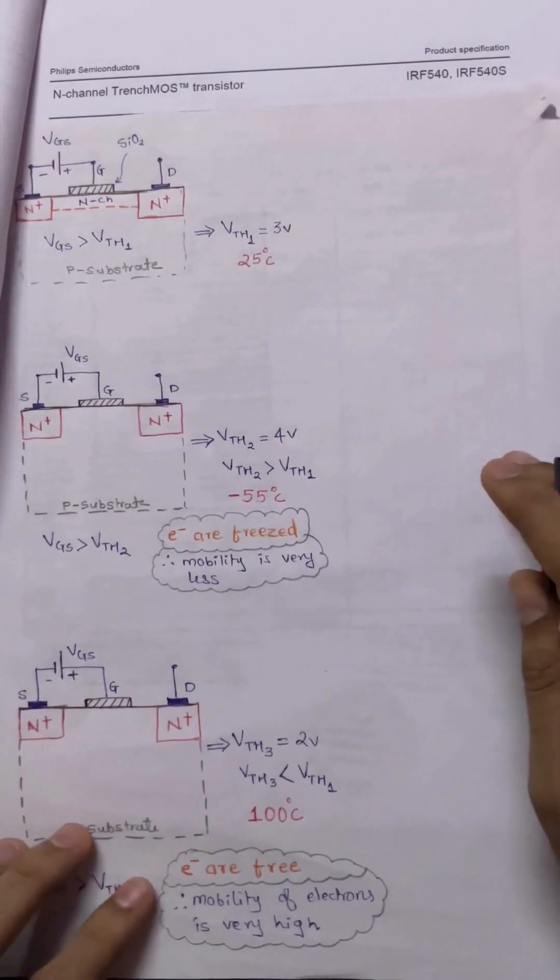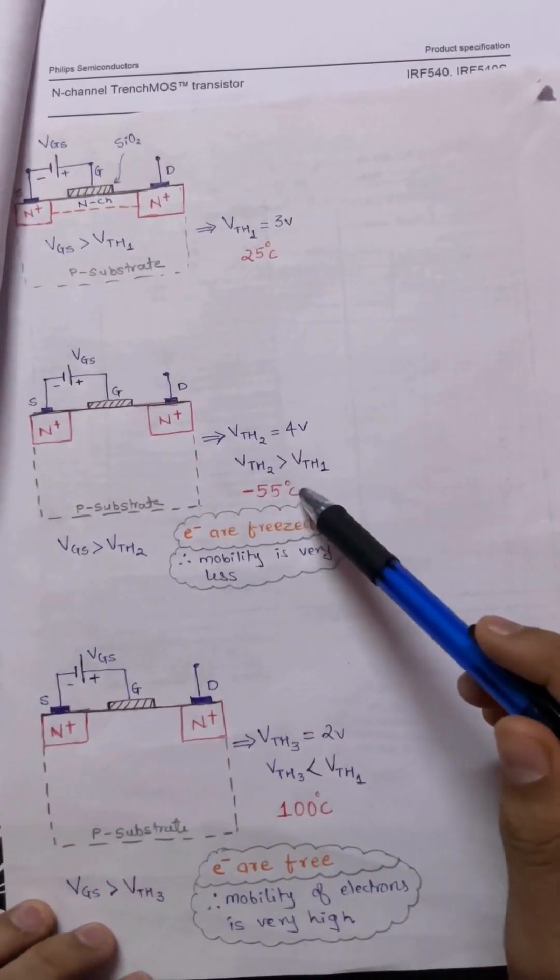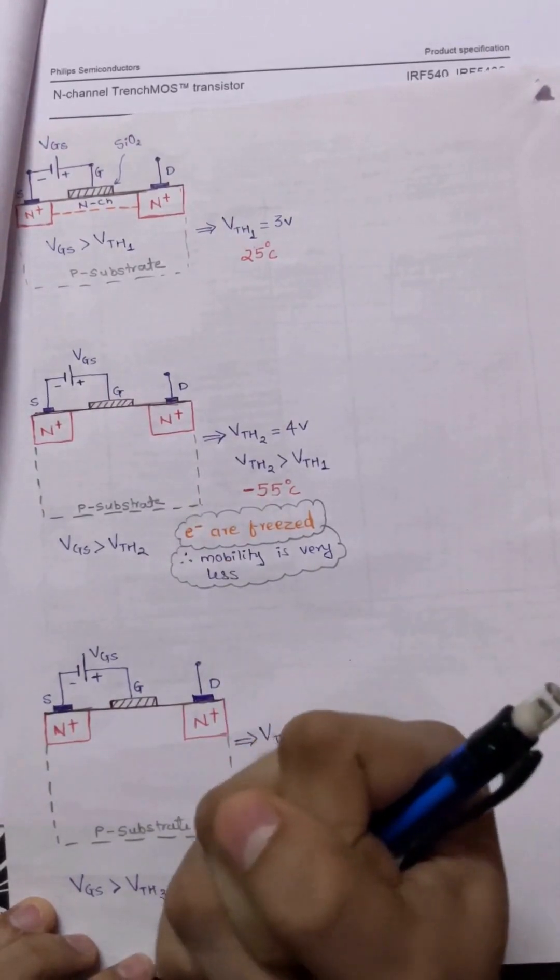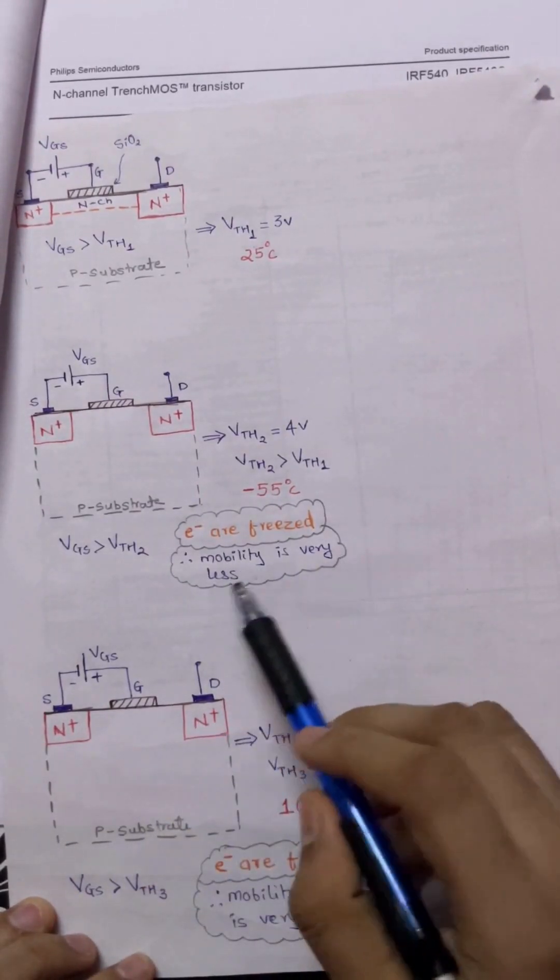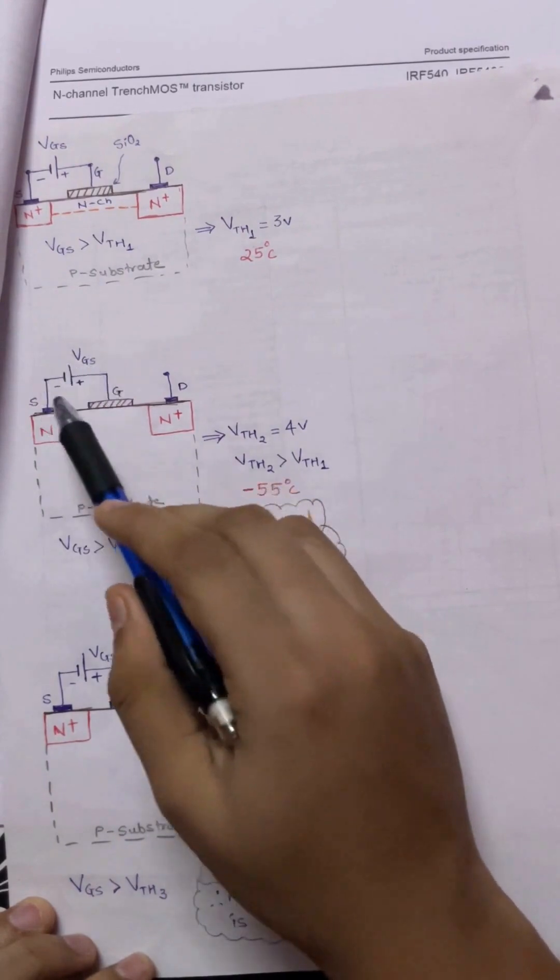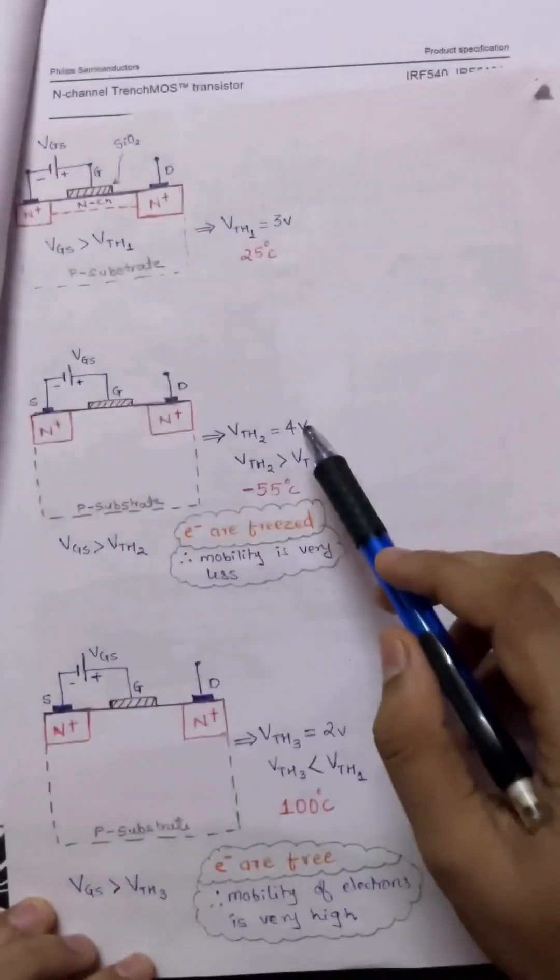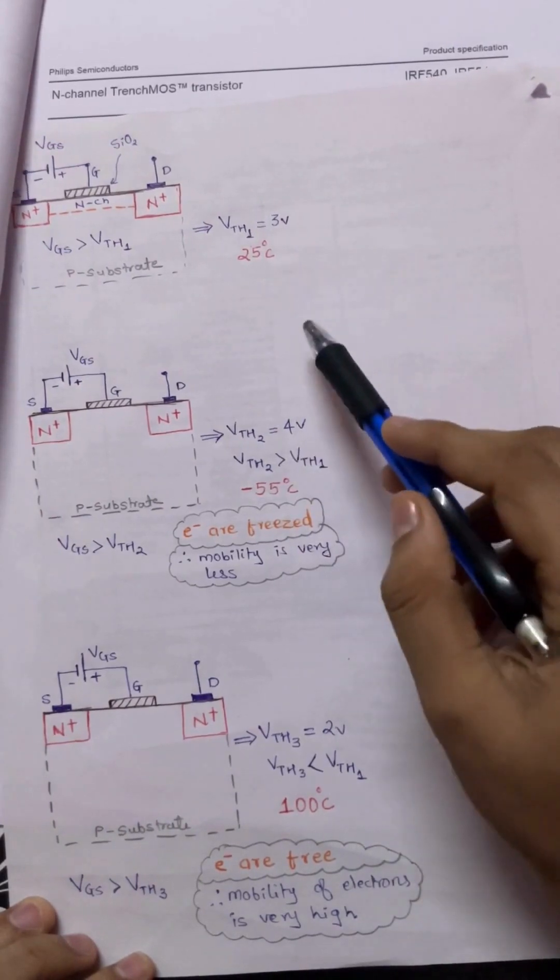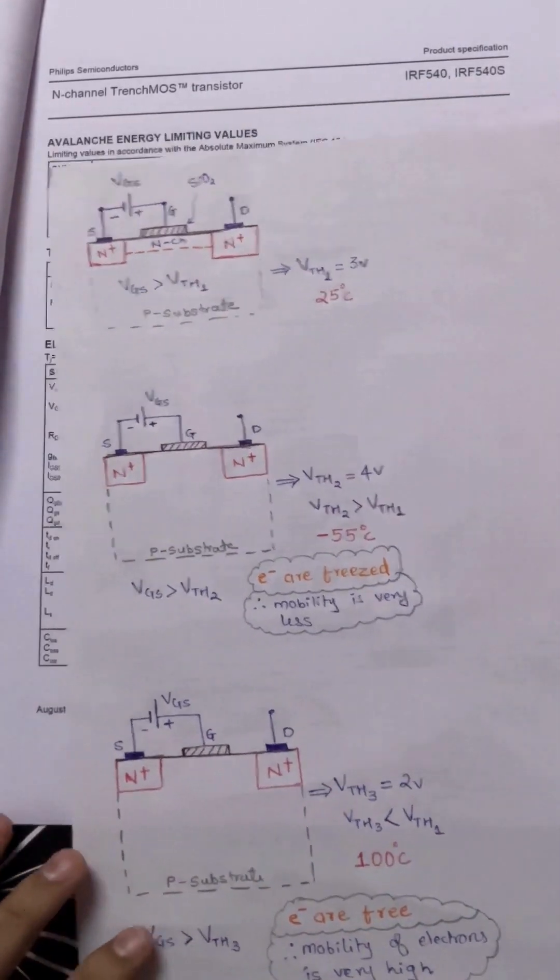Now let's assume I'm operating the same MOSFET at around -55 degrees Celsius. This time the minority electrons which are present in the p-substrate, they are completely freeze, and therefore the mobility is very very less. For that particular reason we need to increase the gate threshold voltage. In that particular scenario our threshold voltage also increases - as you can see it has been increased by one volt.